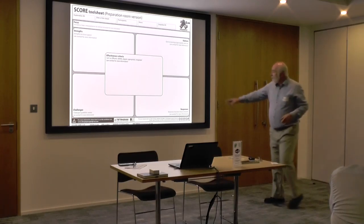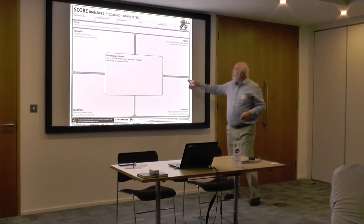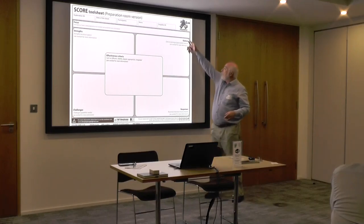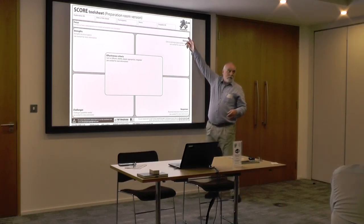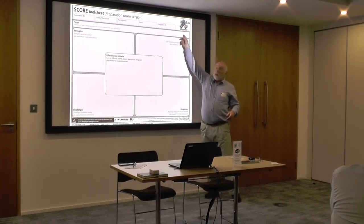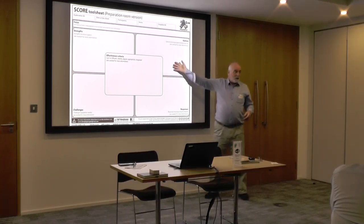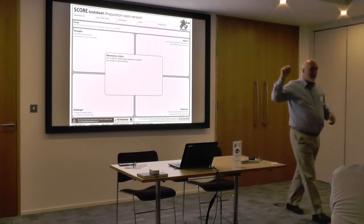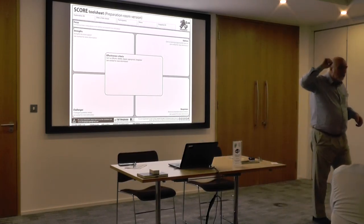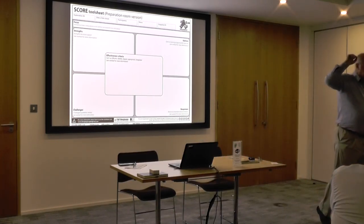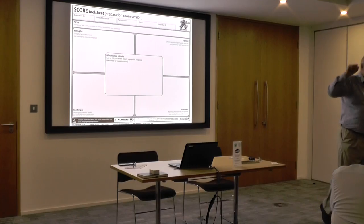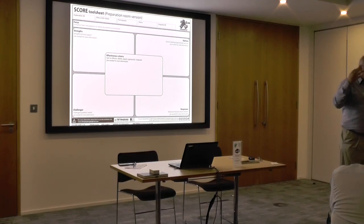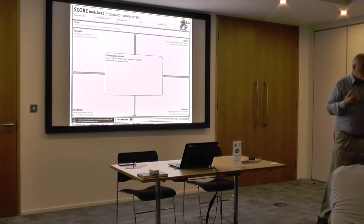One of the reasons we have rounded corner boxes for some elements and square sharp corners for others is because the sharp-cornered ones are fixed, while the rounded ones you scribble over. The whole idea is to get people to converse, to scribble, to make a mess — and then slowly pull out the bits that you want.